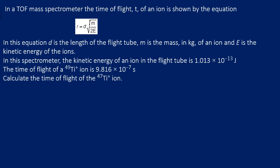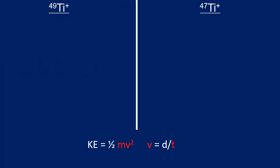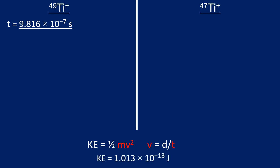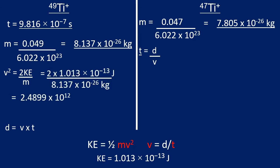Next question — again follow a logical pattern with two different isotopes. Pause the video and attempt it. We've been given the time for titanium-49 and the kinetic energy this time. We can find the masses of both isotopes. We've been asked to calculate the time for titanium-47, but we haven't been given the distance. So the first step is to use the titanium-49 information to find the distance of the flight tube using v² = 2KE/m.